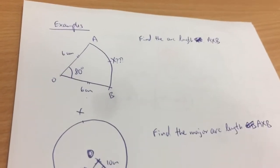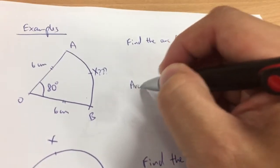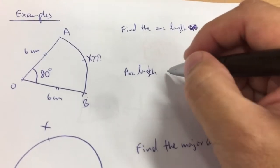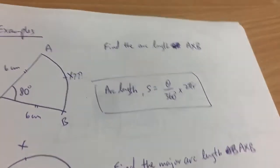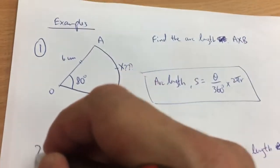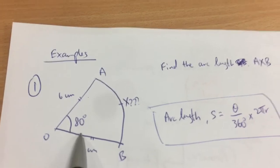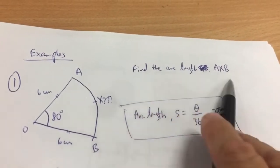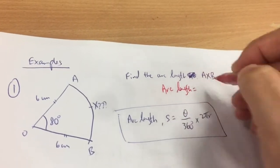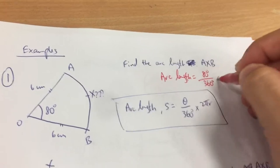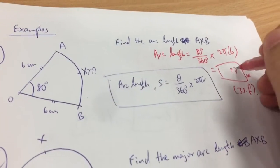That was what I taught in class. Now I'll give you two examples of how to apply this formula. The arc length — sometimes we use S — equals theta over 360 degrees times 2πr. For example 1: I have a sector with radius 6 cm and the angle subtended between the two radii is 80 degrees. Find the arc length AXB. Arc length equals 80 over 360 degrees times 2 times π times 6. Then just punch your calculator — give the answer to 3 significant figures.